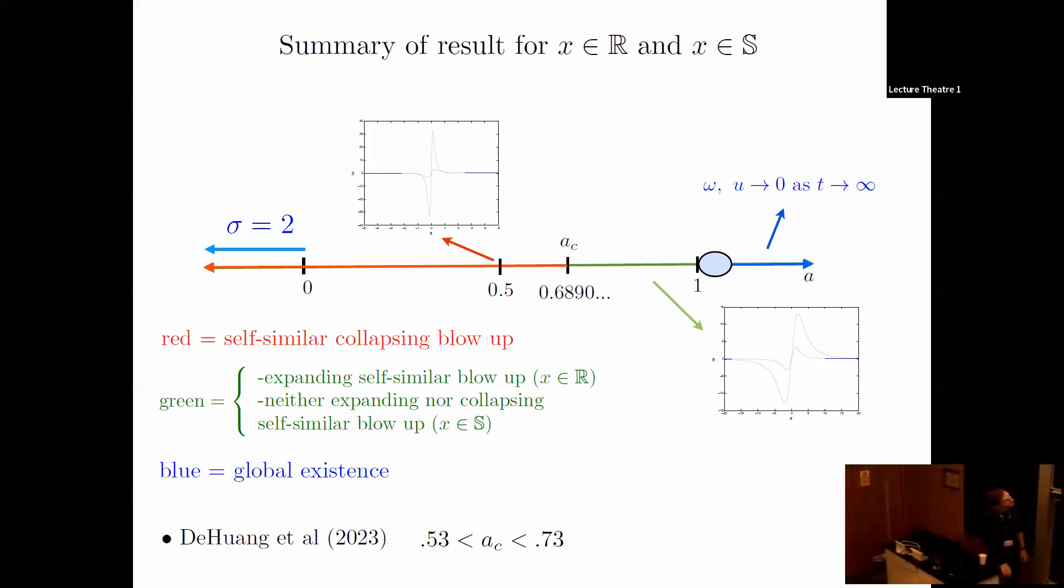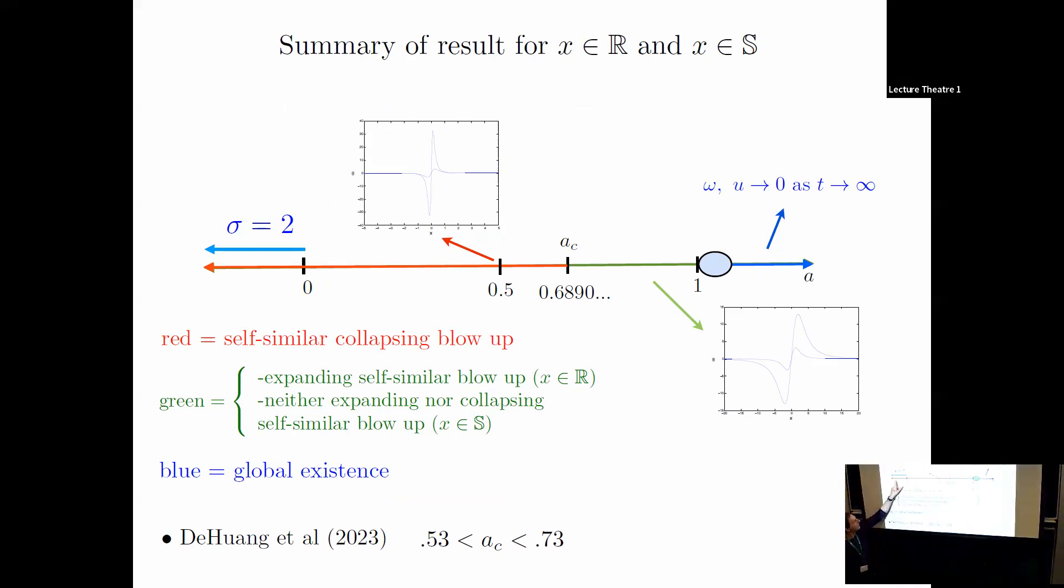This is a summary of our results versus A. On both the real line and periodic domain, we find self-similar collapse in the red region. That transitions to expanding self-similar blowup on the real line, or on the periodic domain, neither expanding nor collapsing blowup because you can't expand forever periodically. For A greater than one, we find numerically suggestive evidence of global existence. There are some interesting points and features here.